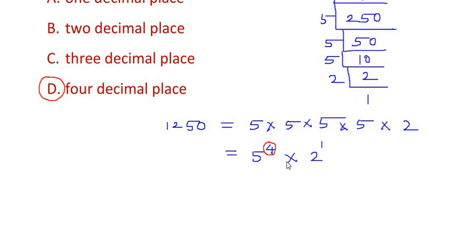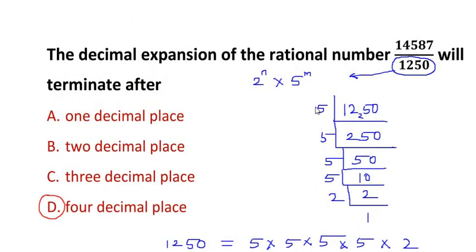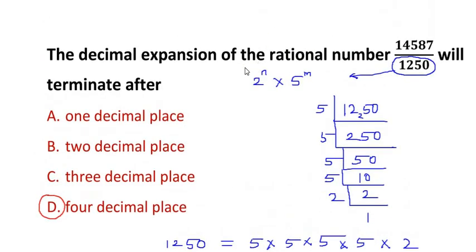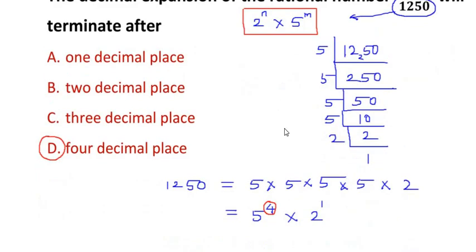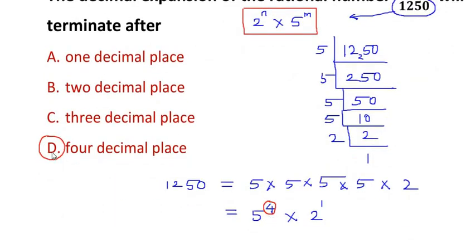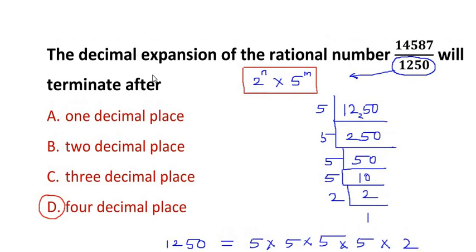So this is how we find the answer for these kinds of questions. Look at the denominator, go for prime factorization to find its factors, and make sure the factors are in terms of 2's and 5's. If we get it in the form of 2 to the power of something and 5 to the power of something, we choose the highest power — that is the answer. It terminates after 4 decimal places, and you do not have to go for long division.